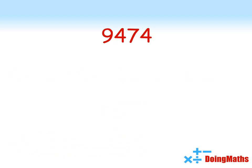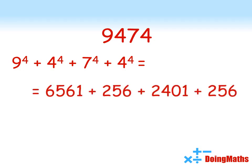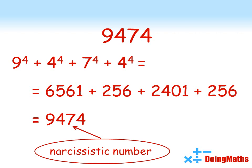Let's have a go at a bigger number now. So this time there are four digits in 9,474. So we're going to raise each of them to the power of 4. So there we go. 9 to the power of 4 is 6,561, 4 to the power of 4 is 256, 7 to the power of 4 is 2,401, and then another 256 at the end. If we add all them together, we're back where we started. So 9,474 is also a narcissistic number.